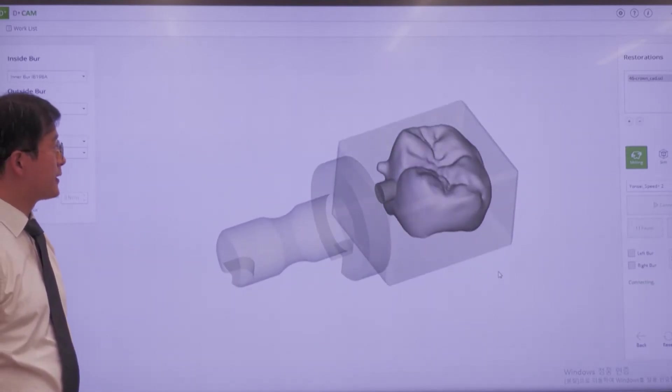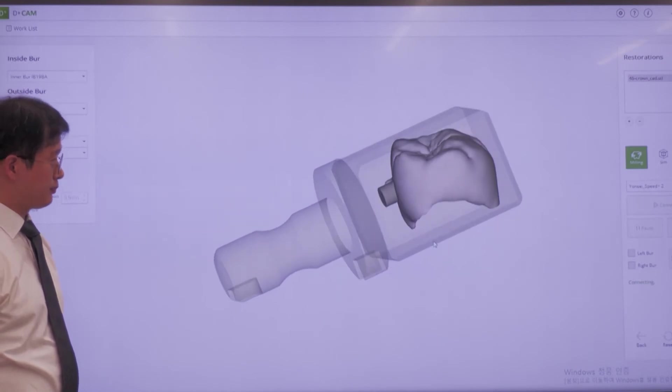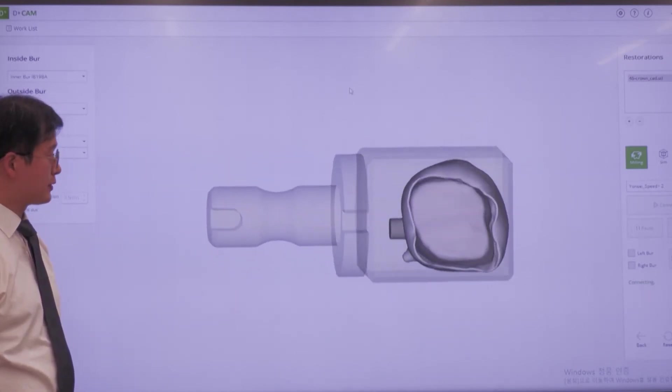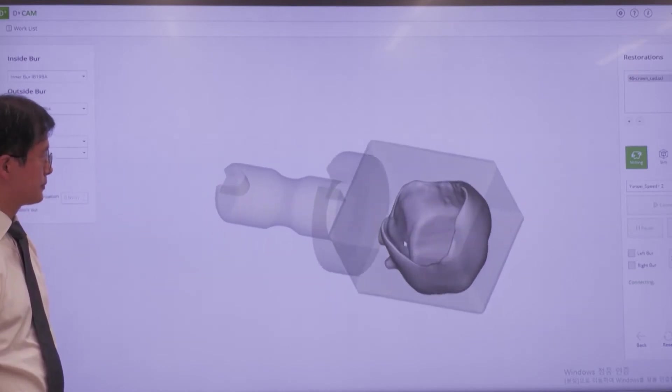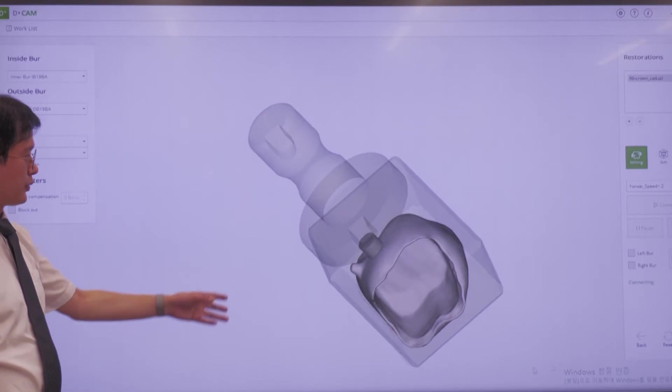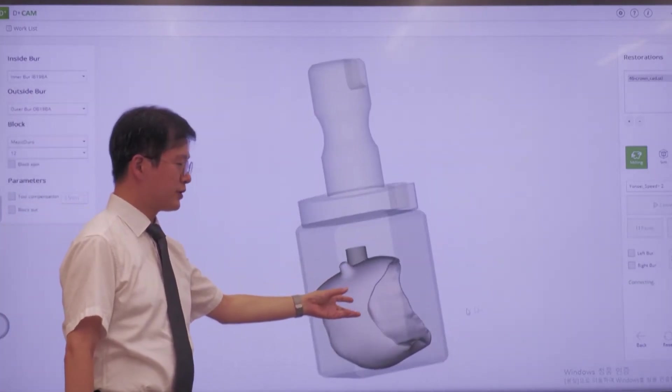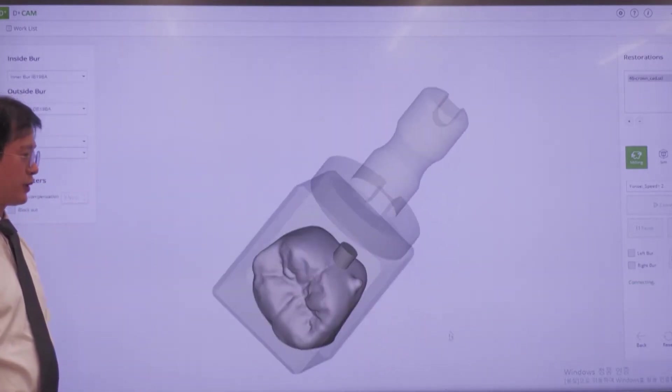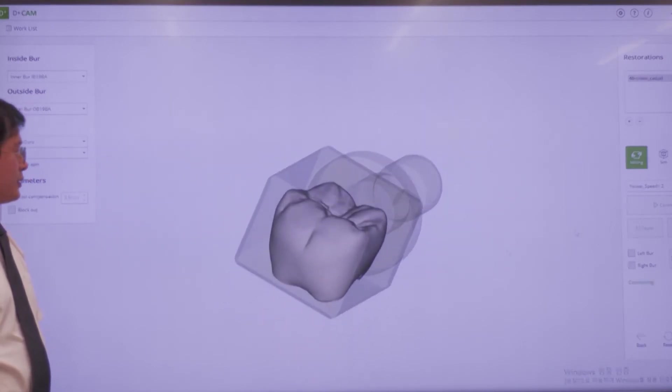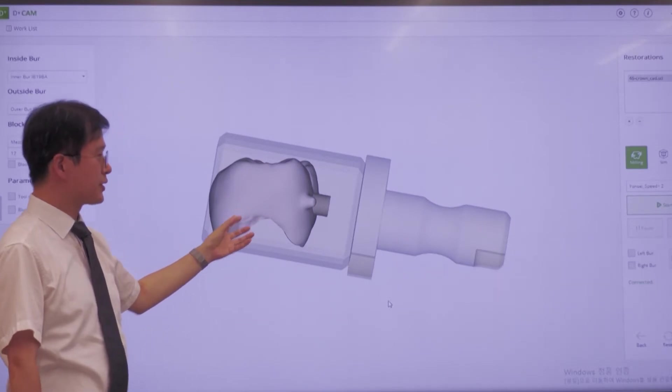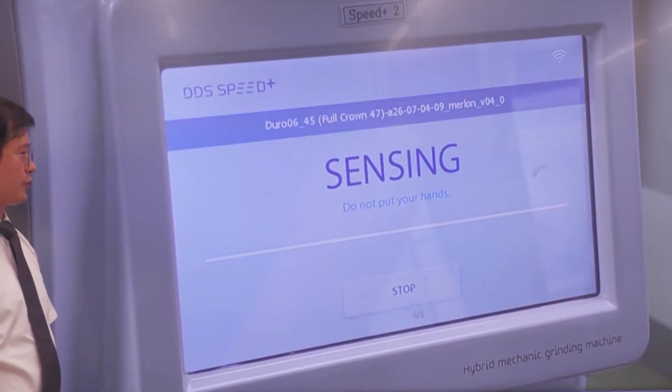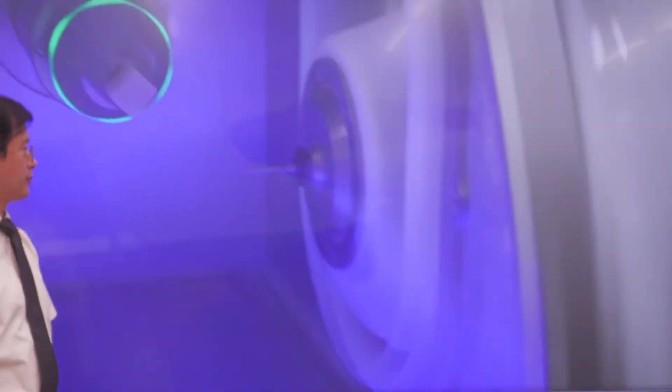We finalized toolpath calculation with this software. We have to prepare abutment tools very well without any undercut. If the restoration has undercut, the machine cannot cut those areas. So we have to do well. We push the start button.